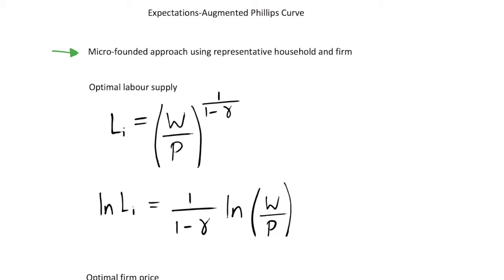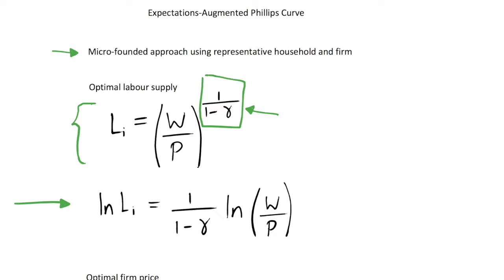Since we're microfounding, we're going to begin with our optimal labour supply choice. We saw in a previous video that this optimal labour supply choice was given by an equation that is some function of the real wage and the elasticity of labour supply gamma. In this video we're going to take the natural logarithm of everything, which makes it much easier to substitute values and rearrange without dealing with powers of 1 over 1 minus gamma.